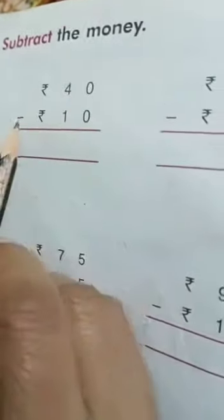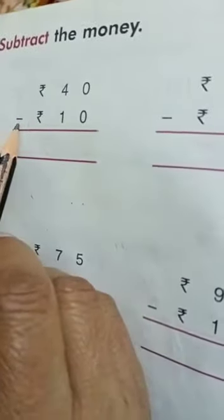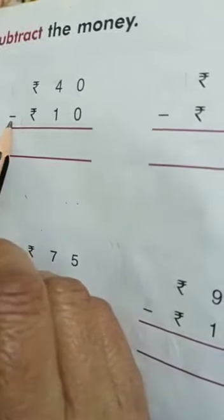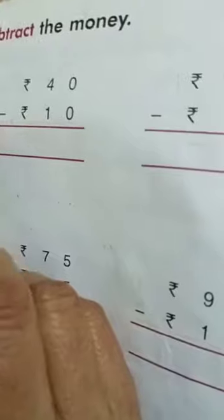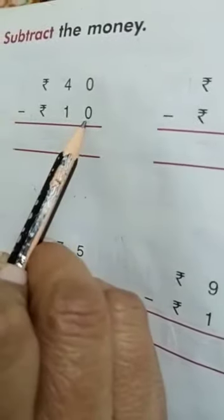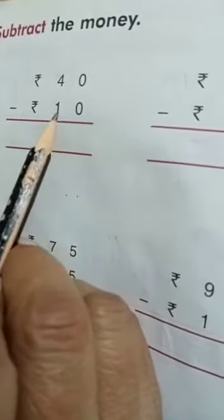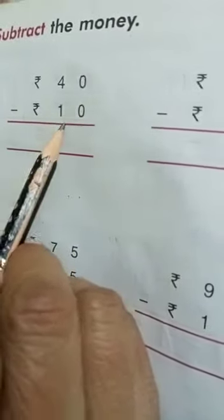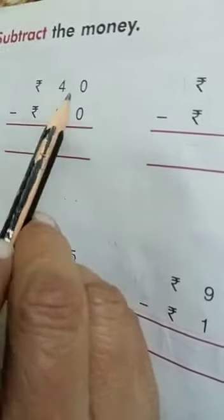Now rupees 40, and this is a sign of subtraction, rupees 10. Now we have to take away rupees 10 from rupees 40.